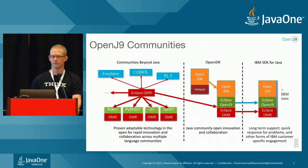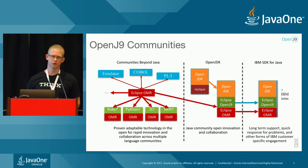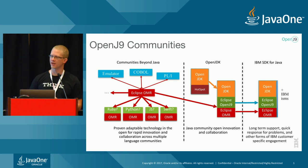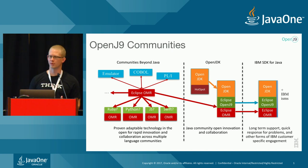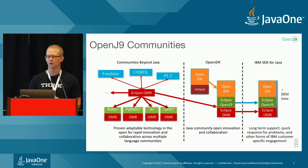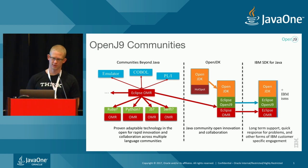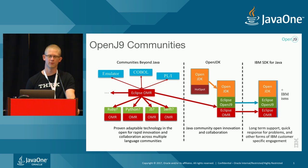OpenJ9 is not a full JDK on its own. It combines with OpenJDK — we take Hotspot out of it and add Eclipse OpenJ9 and Eclipse OMR. Eclipse OMR is another project that came out of the J9 code base. It's a series of language-agnostic runtime components, so you could take those and build any language runtime you wanted. On the other side, we'll have IBM's product, which has a small shim of IBM-isms built around OpenJ9 with OpenJDK.